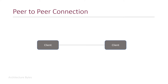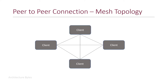The first topology is a peer-to-peer connection, where two clients talk to each other directly, sending and receiving messages. In a group setting, peer-to-peer again means every client sends data to every other client and receives data from every other client. This looks like a mesh.